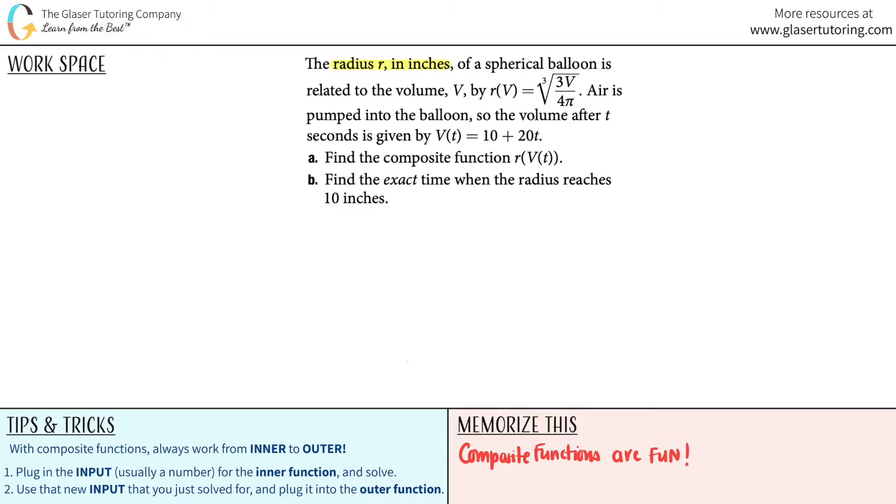The radius r in inches of a spherical balloon is related to the volume V by r(V) equals the cube root of 3 times V divided by 4π. Air is pumped into the balloon, so the volume after t seconds is given by V(t) equals 10 plus 20t.